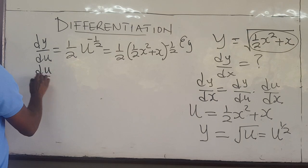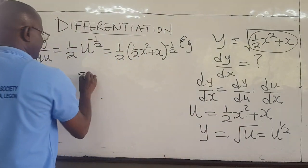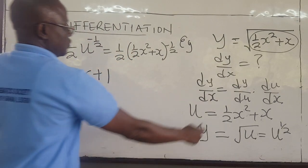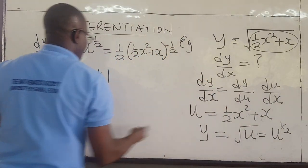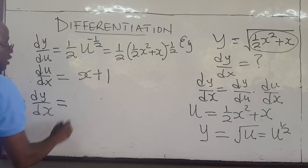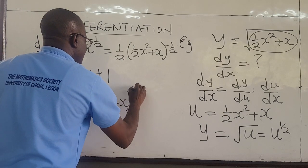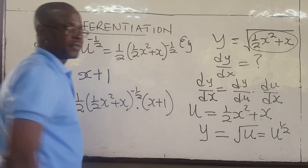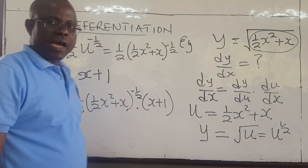du/dx will be equal to: the derivative of 1.5x squared is 1.5 times 2, which gives just x, plus the derivative of x which is 1. So du/dx equals x plus 1. We know dy/du and we know du/dx, so we put everything together. Therefore dy/dx equals one-half times x squared plus x to the power negative one-half, multiplied by x plus 1. This is the derivative of this function using the chain rule.